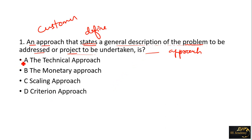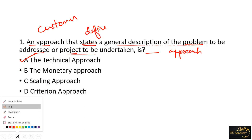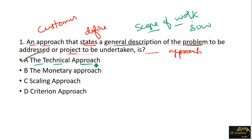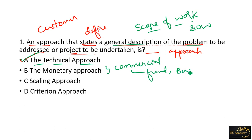That is a type of technical approach. Before going to the monetary approach - technical approach is clear. This is a description that defines a problem. That is a technical approach - it is the scope of work. The scope of work is used to define a technical approach. A commercial term is related to funds, budget, and costing - that is the monetary approach.